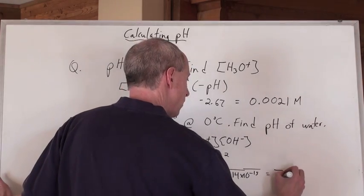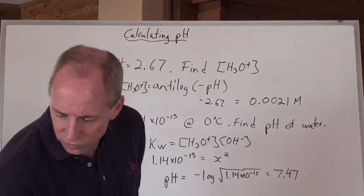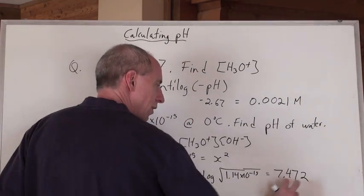You get 7.47. Wait a minute, you get 7.472, because three significant digits, three numbers after the decimal.